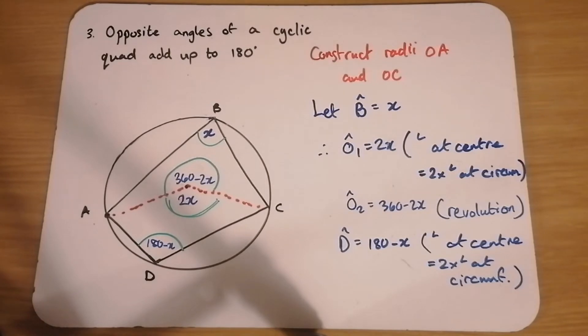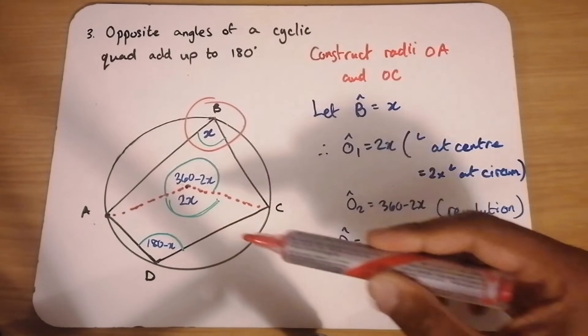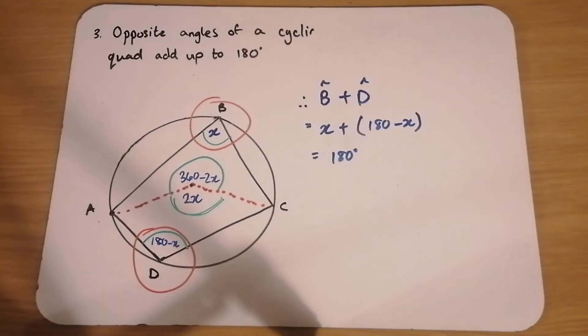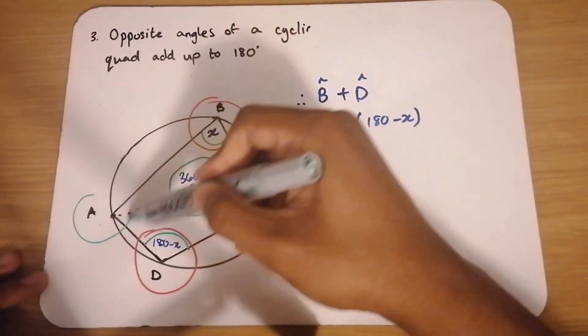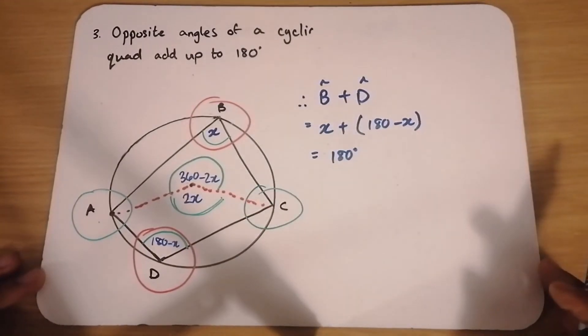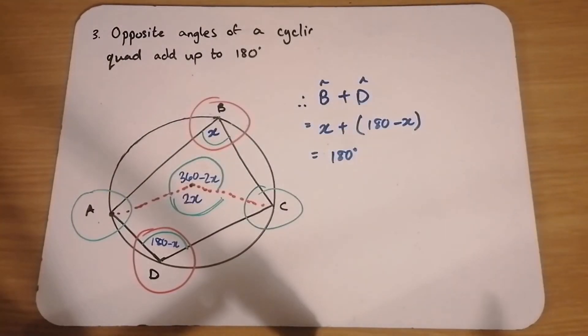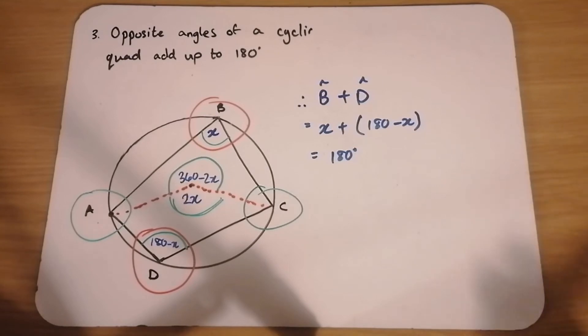What we notice now is that angle B plus angle D is equal to 180 degrees. And this is what we're looking to prove. And if B plus D is 180 degrees, that must mean that A plus C is also 180 degrees. Because these four angles added up together should give us 360 degrees. Because the four angles of a quadrilateral should always add up to 360. And hence A plus C is also equal to 180 degrees.